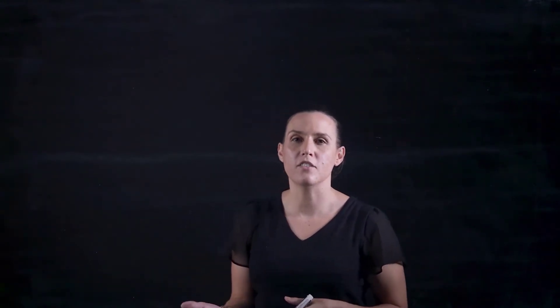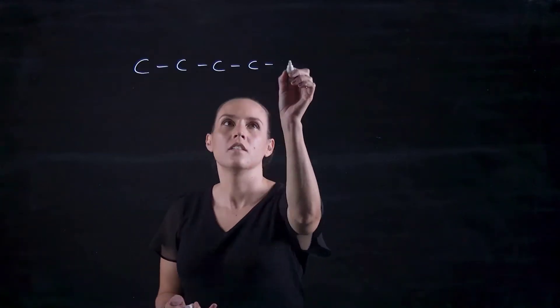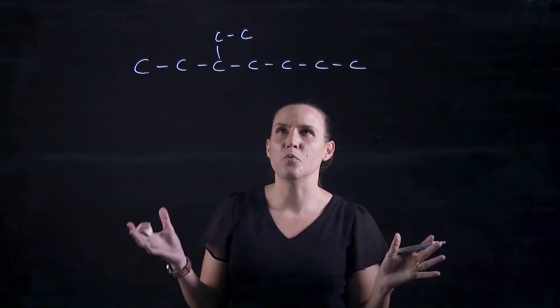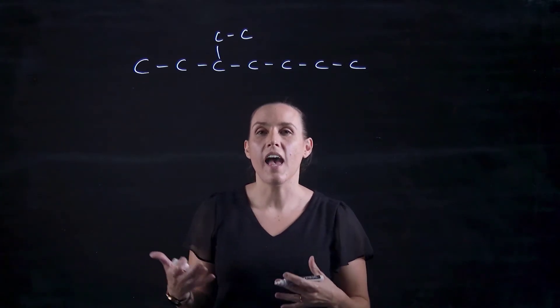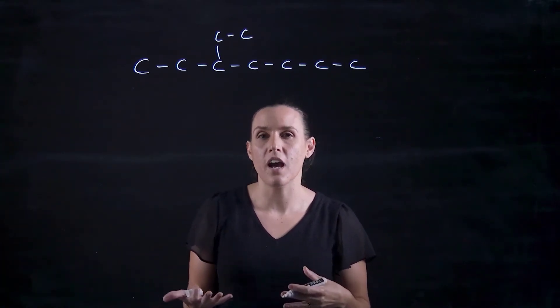So let's start off with drawing out a compound. I want to draw this compound in the full structural formula. I always start with putting my carbons out first, and then knowing that each carbon has four bonds, I fill up the hydrogens.